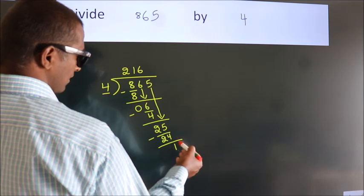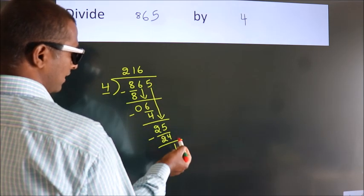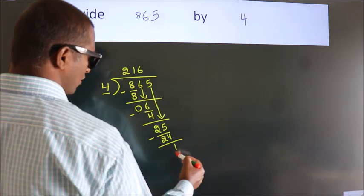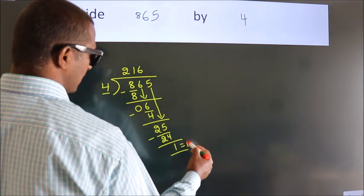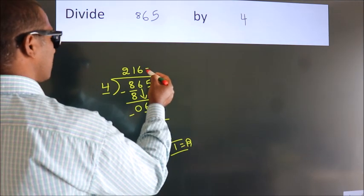After this, no more numbers to bring it down. So we stop here. This is our remainder. This is our quotient.